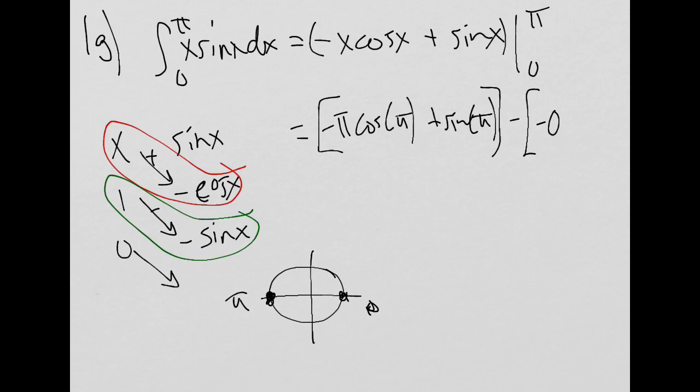I'm gonna get minus zero, that's zero being plugged in for here, times cosine of x. I'm not gonna write cosine of zero, I'm just gonna write zero, because it's gonna be minus zero times, right? And then, plus sine of zero, so plus sine of zero.